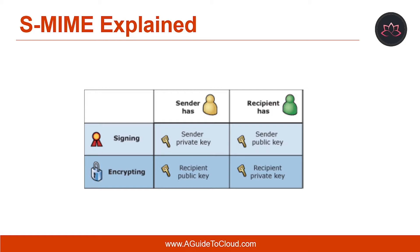If you sign a message with a private key, it can only be validated by using the public key, and if somebody encrypts a message with a public key, it can only be decrypted with the private key. Therefore, you need to secure the private key at all times, but you need to provide the public key to any corresponding partner you want to use S-MIME with, and vice versa.